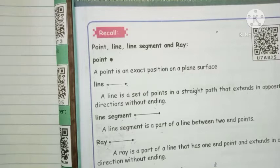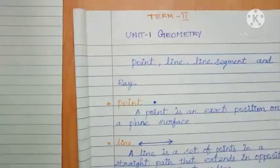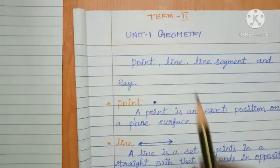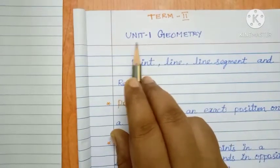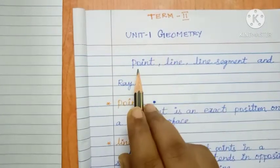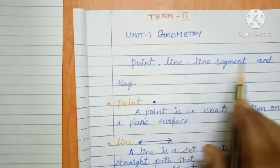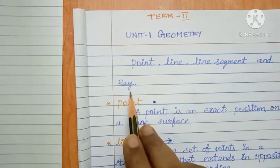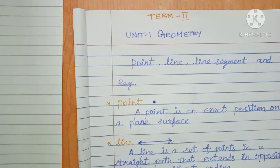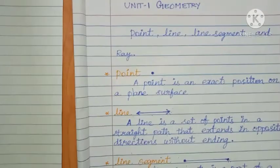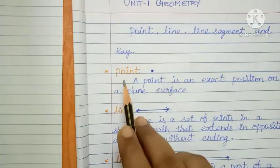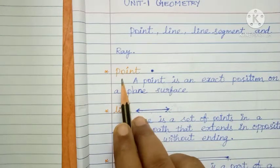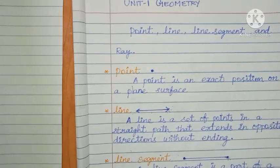Okay children, do you understand? Write in your classwork: Term 2, Unit 1, Geometry — Point, Line, Line Segment and Ray. These are the definition notes for you. Write in your classwork, or if you don't have a classwork book, write in your rough note. Attend class regularly, complete classwork, and learn carefully.